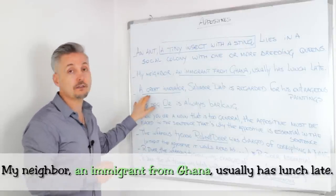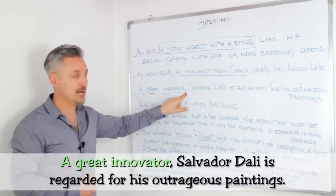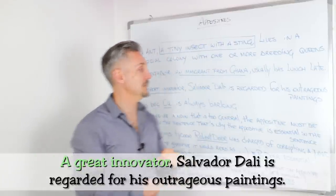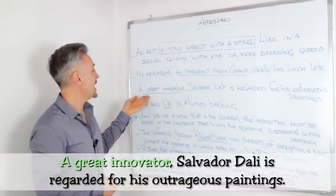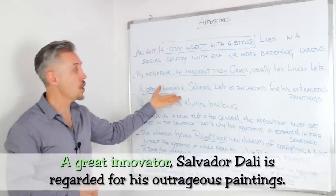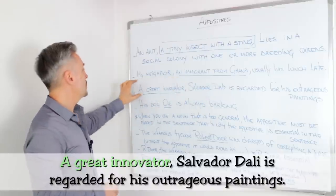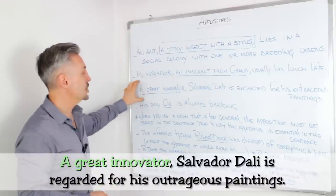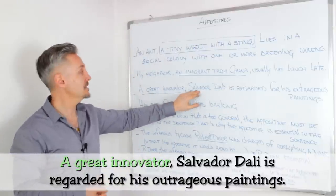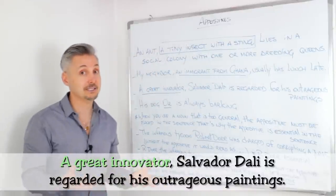Now let's take a look at the third example. 'A great innovator, Salvador Dali, is regarded for his outrageous paintings.' And here I added the appositive first — 'A great innovator.' Who? Salvador Dali. So you could leave this out and the sentence would make sense: 'Salvador Dali is regarded for his outrageous paintings.' It makes sense.